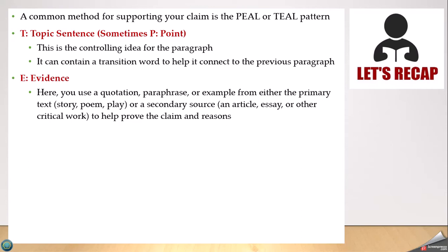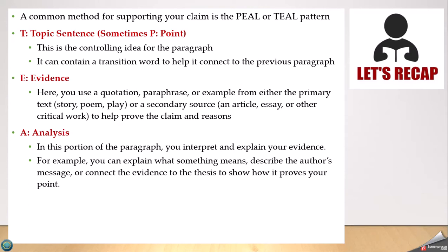You're using quotations or paraphrases to help prove your claim and your reasons. So if you say the major interpretation should be X, and the reason is this, here is a piece of dialogue or a sentence from the text that shows this occurring. A is for analysis — in this portion of the paragraph you're going to interpret and explain your evidence. You should have a one-to-three ratio, meaning for every one sentence of material from the author or critic, you have three sentences of your own words.